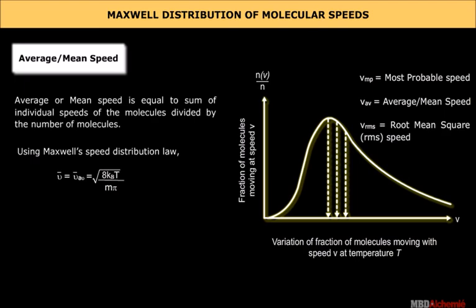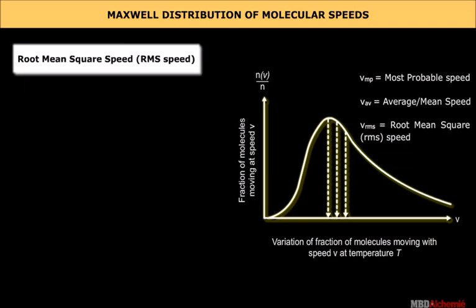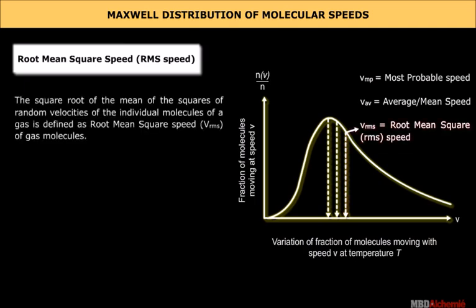Root mean square speed or RMS speed: The square root of the mean of the squares of random velocities of the individual molecules of a gas is defined as root mean square speed or vRMS of gas molecules.